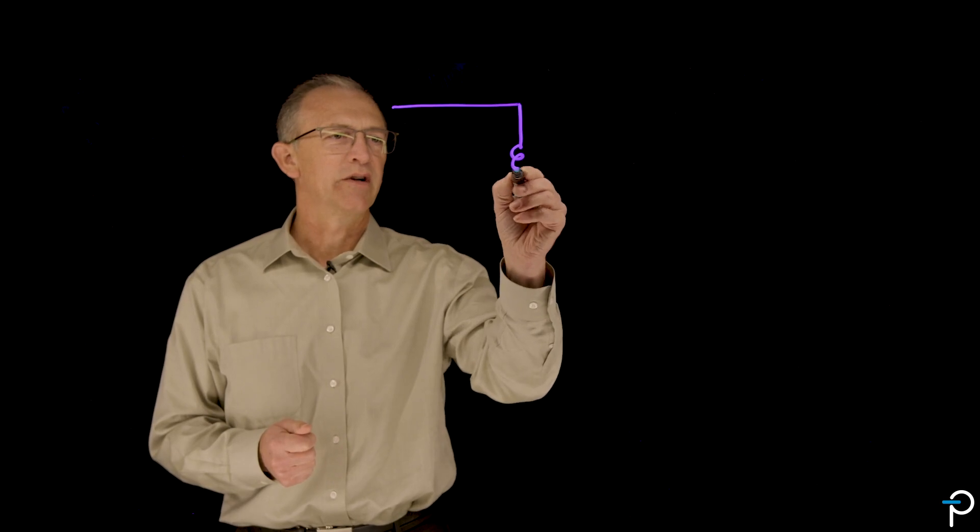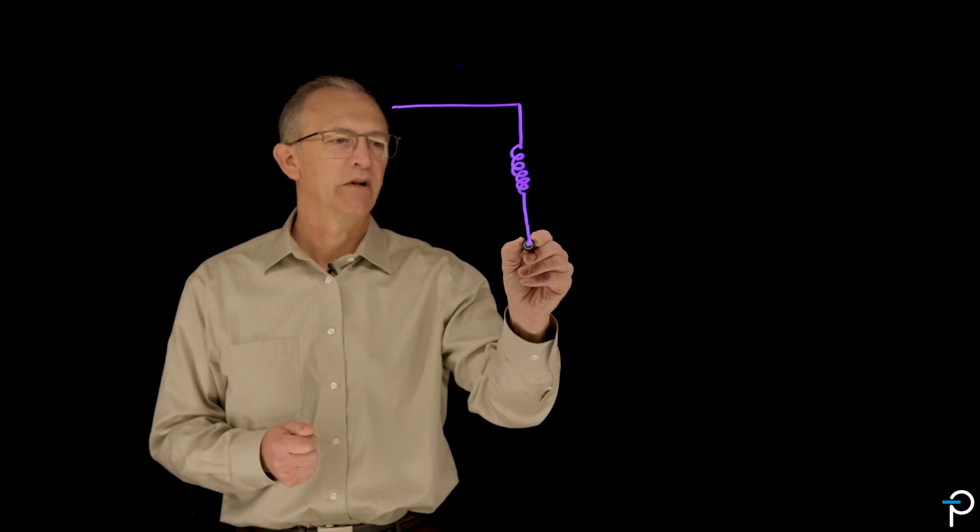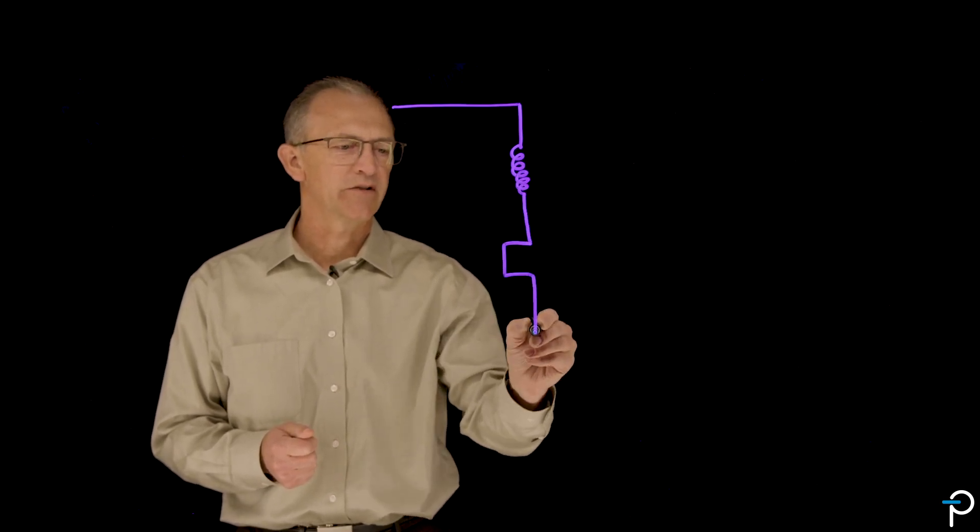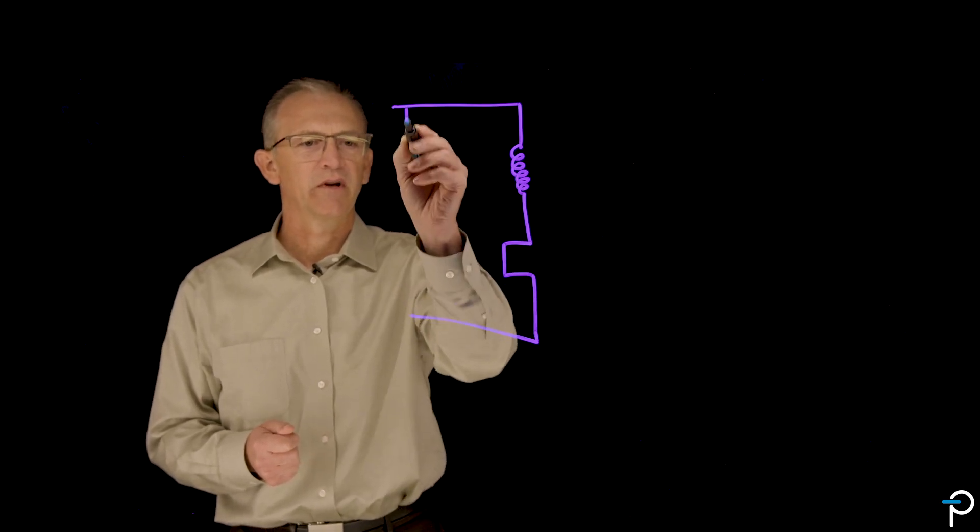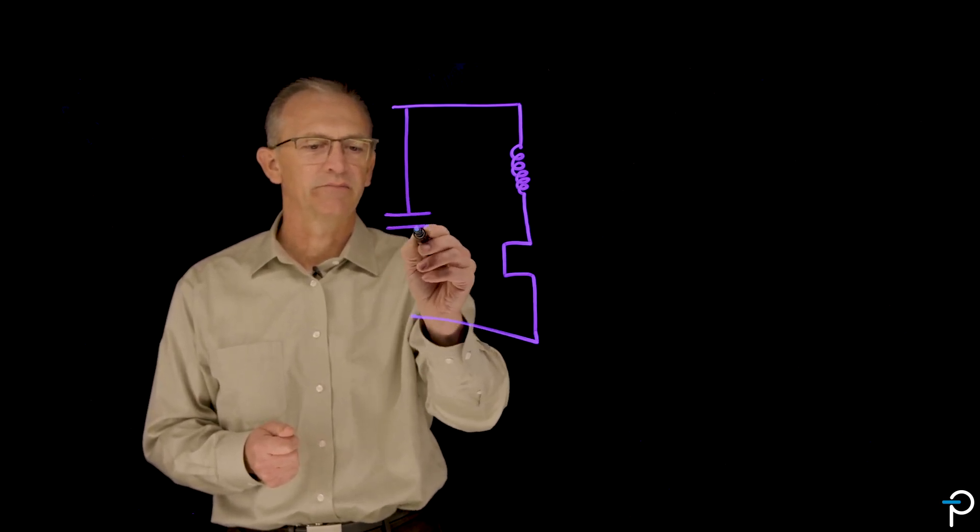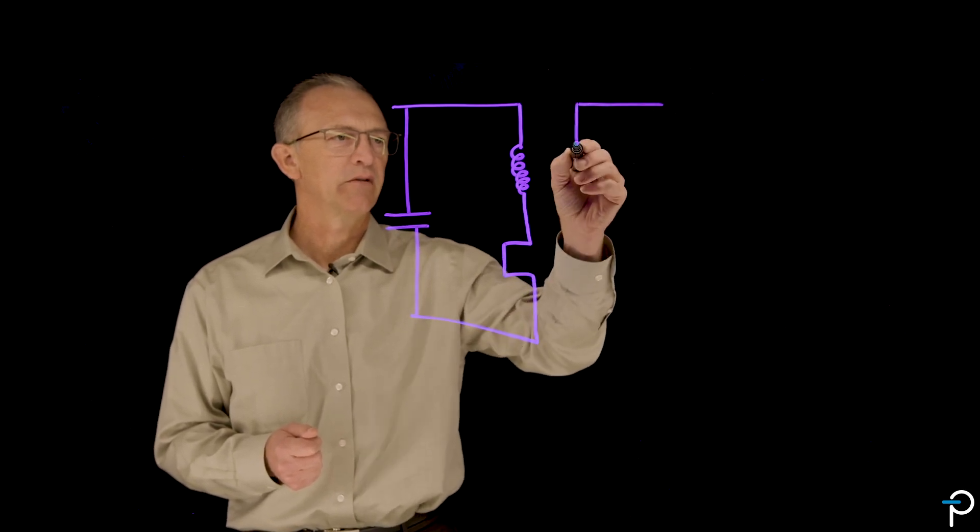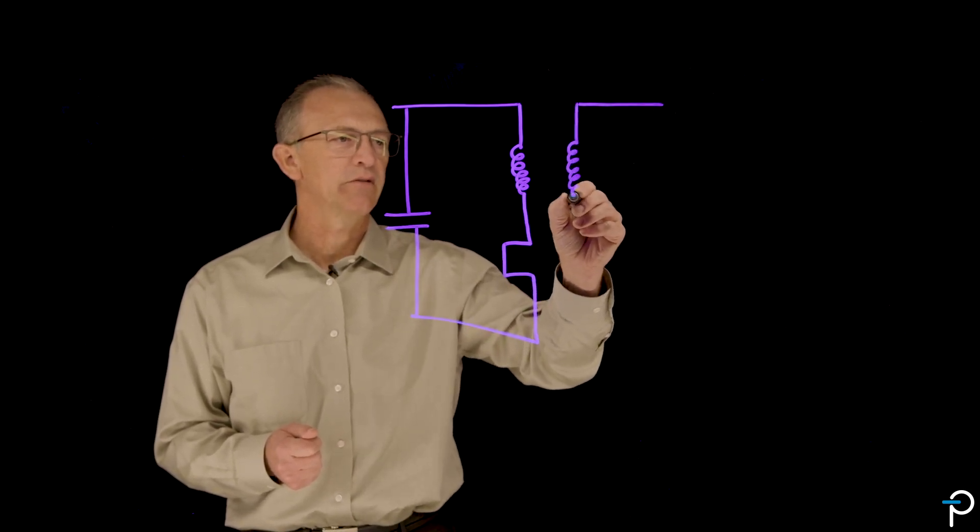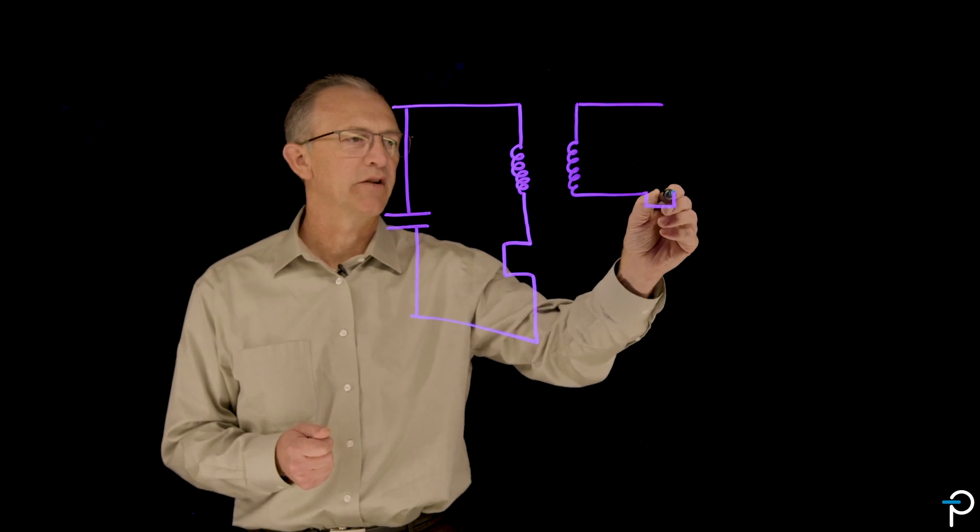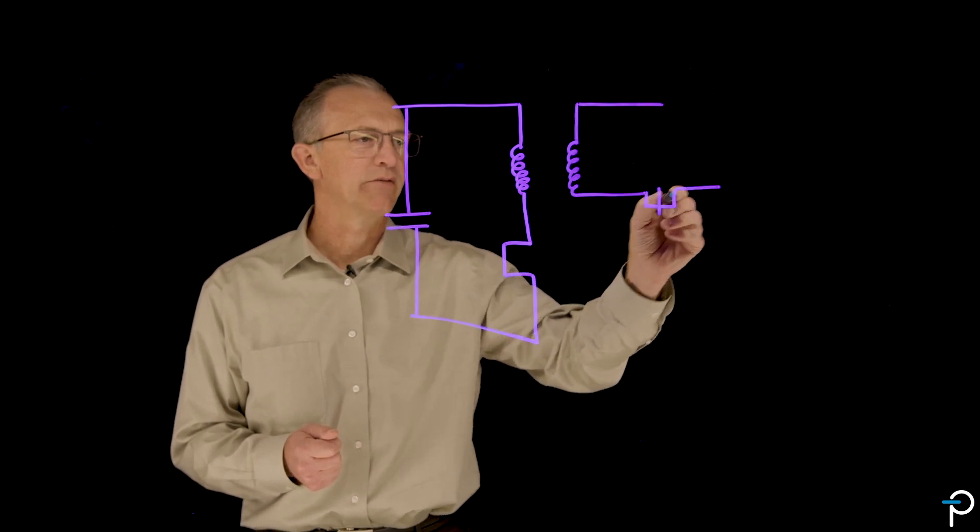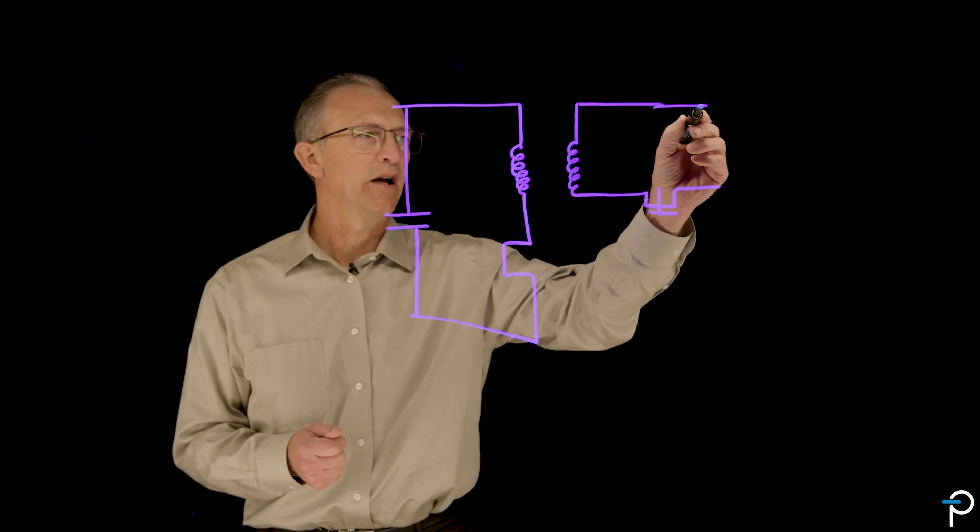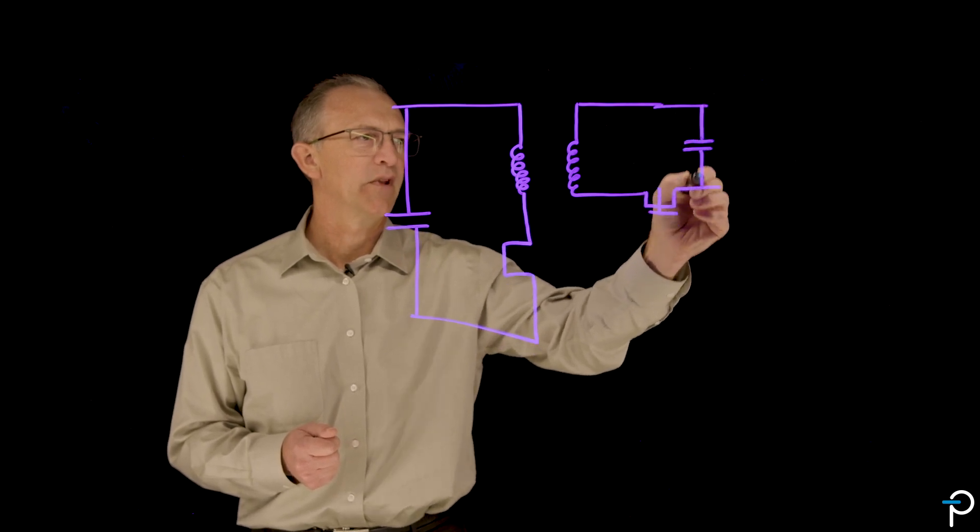Here we have our transformer, our GaN device, our GaN switch, and our bulk capacitor. And then on the secondary side, secondary of the transformer, an SR switch for increased efficiency, and another capacitor for the output.